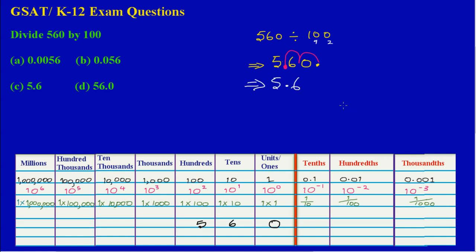After hopping twice to the left, our answer is 5.6. So the correct answer is C. We eliminate options A, B, and D — C is the correct answer.